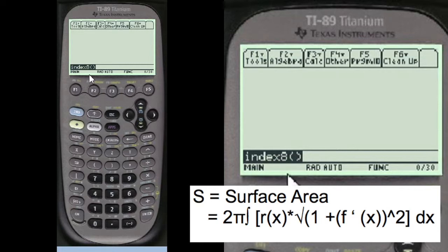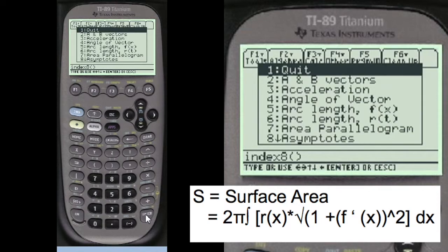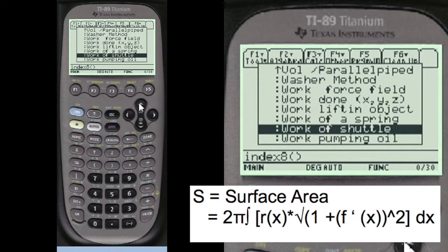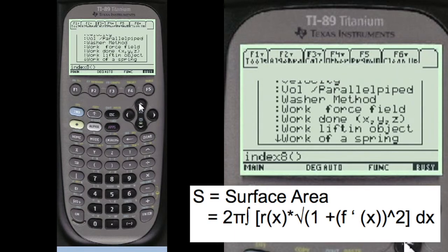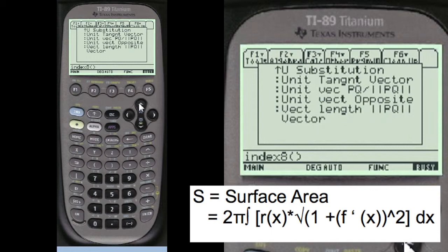So let's do an index 8 to get to my menu. We're going to go up to get to the bottom of the alphabet and scroll up to surface area of revolution.